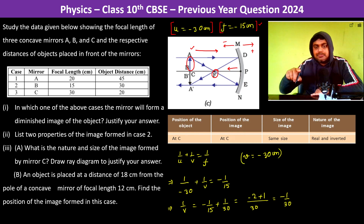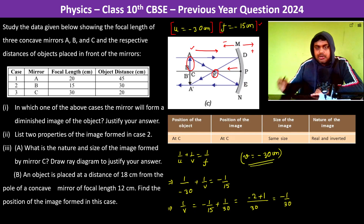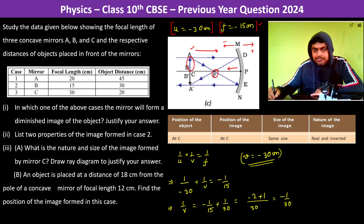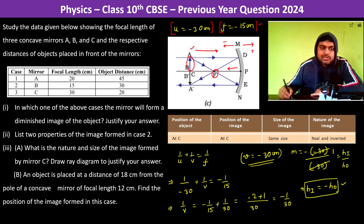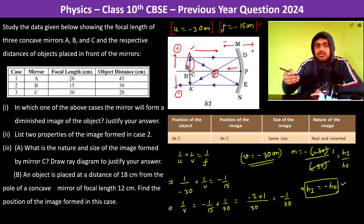Now for magnification: m = -v/u = -(-30)/(-30) = -1 = height of image / height of object. Therefore height of image = -height of object. By sign convention, above the principal axis is positive and below is negative. Since the height of image is negative, the image is inverted. This confirms the answer for the second part.